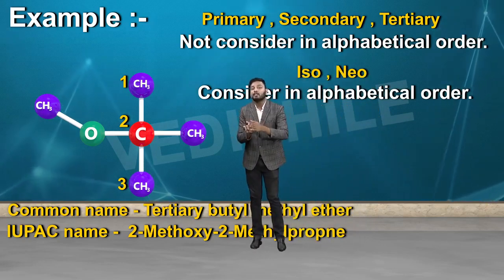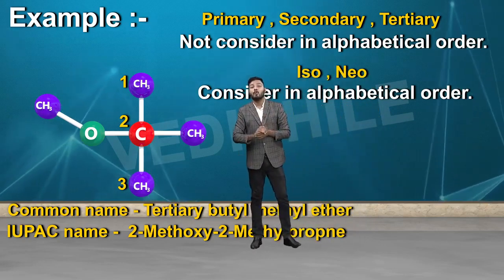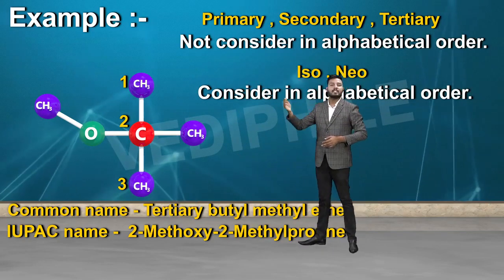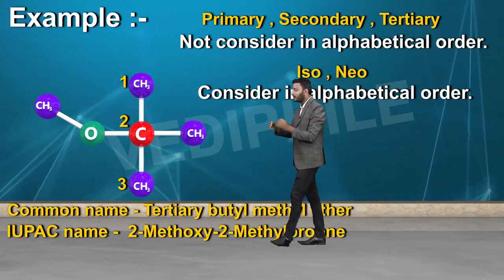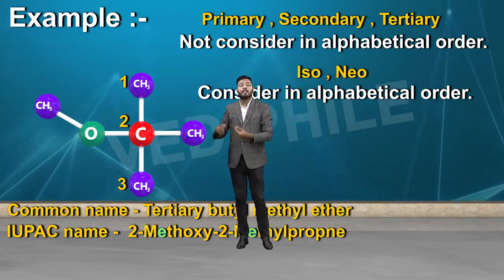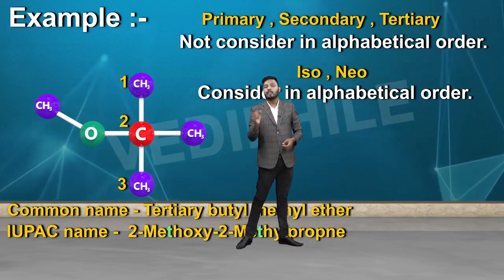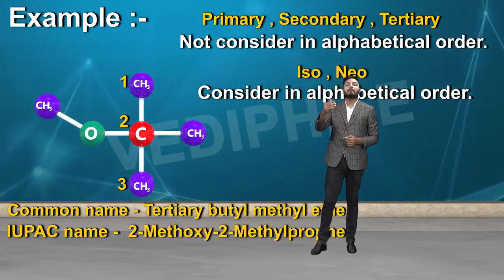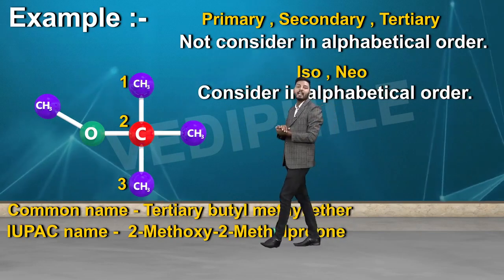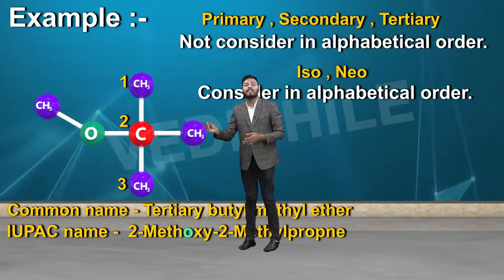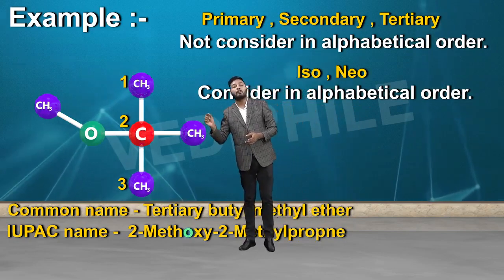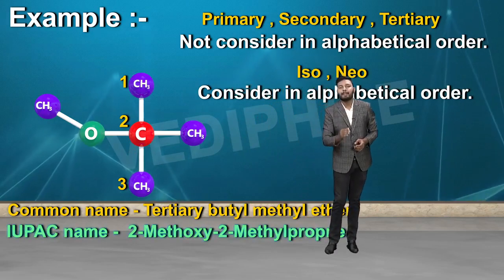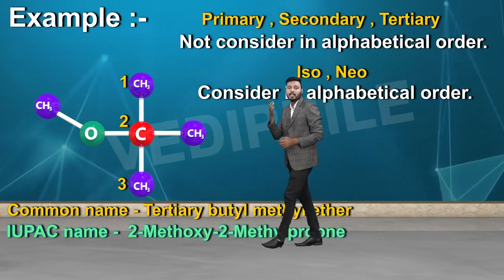Methoxy को पहले क्यों लिखा? Alphabetical order check करें: methoxy और methyl दोनों में M, E, T, H आता है। आगे methyl में Y आता है और methoxy में O आता है — O पहले आता है Y से, इसलिए methoxy को पहले रखा गया। IUPAC name: 2-methoxy-2-methylpropane।